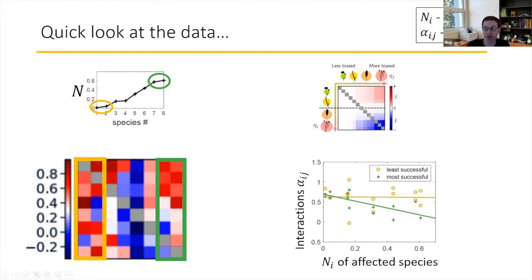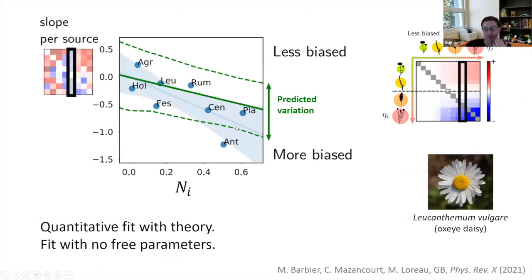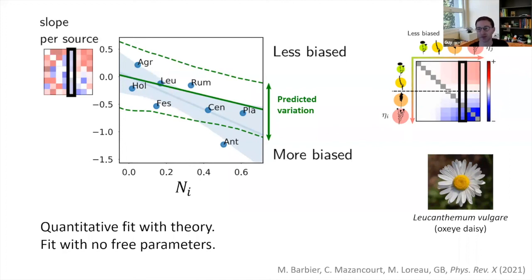This is the essential pattern we described before: abundant species do not compete as strongly with each other — they specialize on competing with the weaker species. The least abundant species, shown in yellow, show no such bias — they compete just as much with everyone else. We did this quantitatively and it matches the theory exactly, to within the statistically expected variations. Essentially you take the abundances of the eight species, measure the slope for each species — how much they avoid competing with other abundant species — and you cannot tell the results from this experiment from a random matrix generated from the distribution we were predicting. There's a quantitative fit with theory with no free parameters.